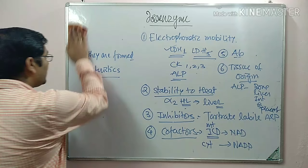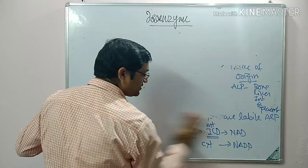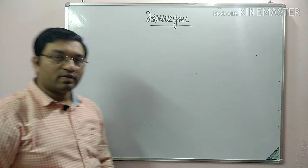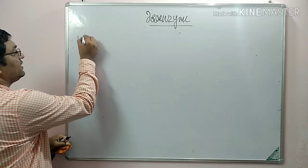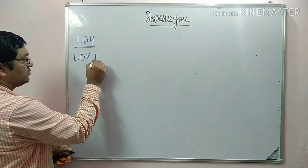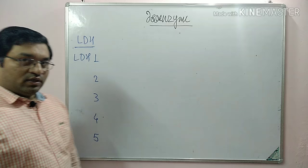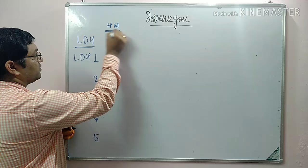The first example is LDH with its diagnostic utility. There are five isoenzymes: LDH1, 2, 3, 4, and 5. It is a tetramer composed of H and M subunits. LDH1 is H4, LDH2 is H3M, LDH3 is H2M2, LDH4 is HM3, and LDH5 is M4. The H4 variant is present mainly in the heart.